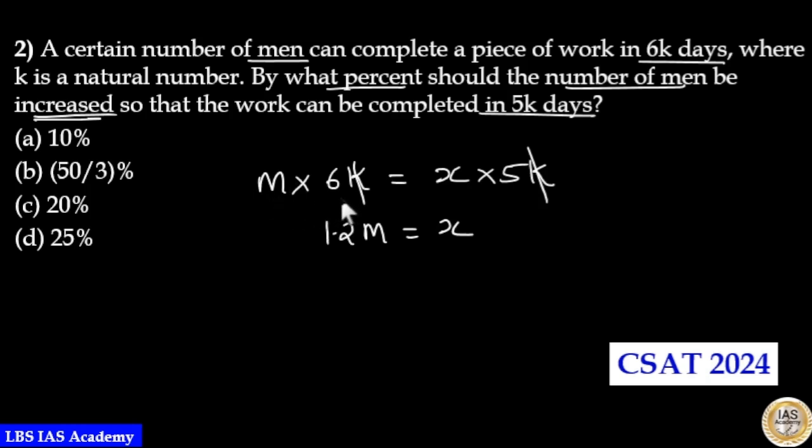If m men can complete the work in 6k days, then 1.2m men can complete the same amount of work in 5k days. So the increment between 1 and 1.2 is equal to 0.2.